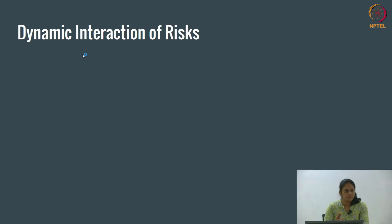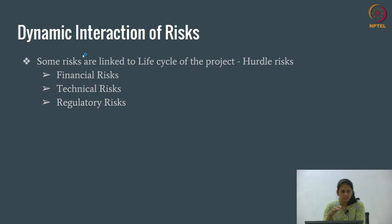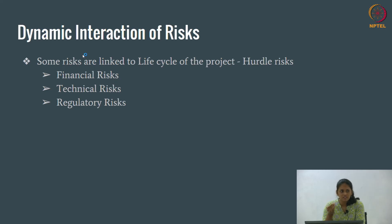It has been observed that there is an interaction between risks too. Some risks are linked to the life cycle of projects — they are called hurdle risks. For example, financial risks: if you get financing in the initial stages, that risk will not occur later. Technical risks: once you select which elements you need to design and construct, that is done. Regulatory risks: once you get the necessary permissions and approvals, you will not face regulatory risks later.